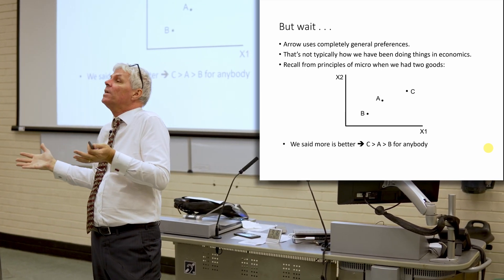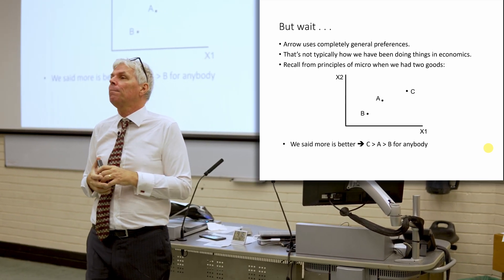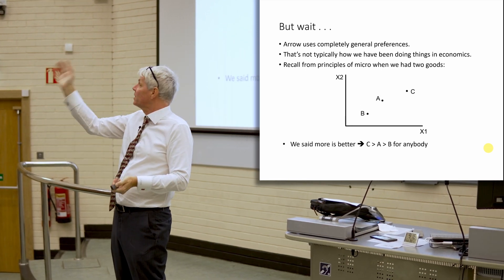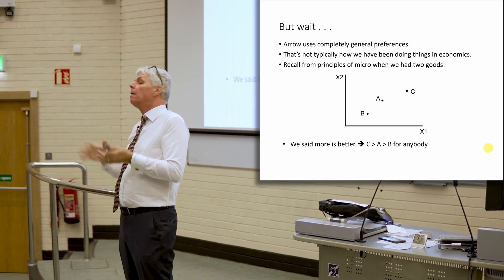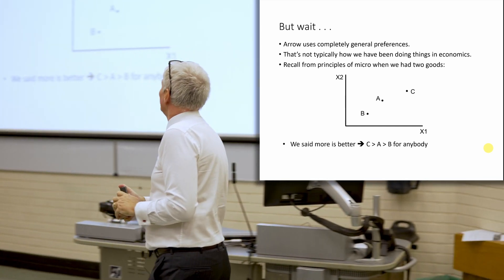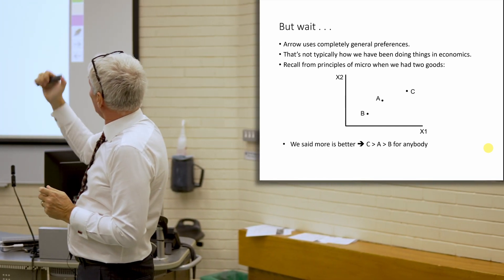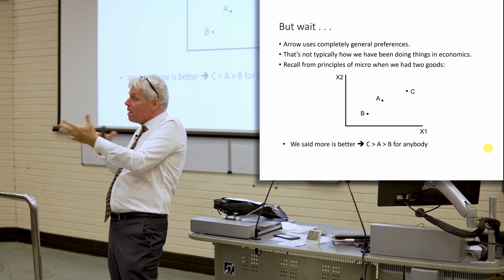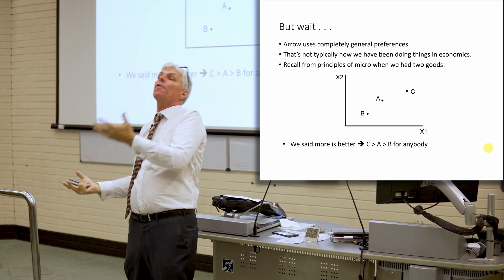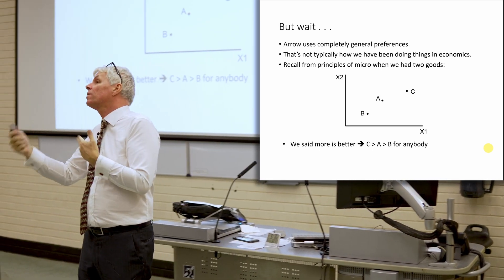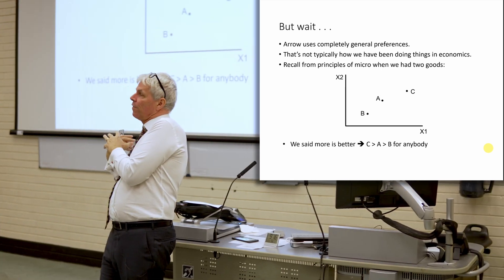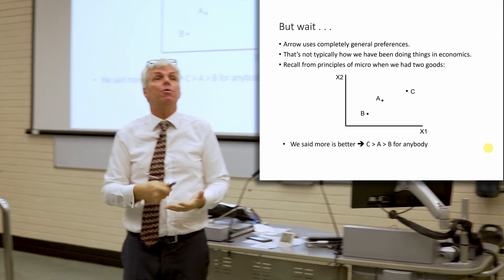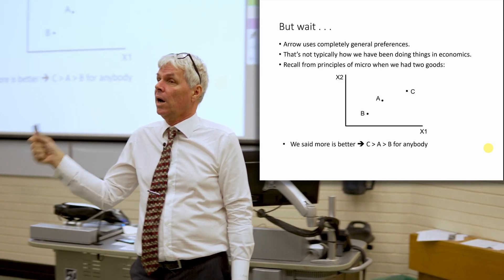For loads and loads of things, that's a perfectly reasonable structure to impose on preferences. Now there are some examples where it's not — if you really want to look at Bill Gates' consumption patterns, maybe this isn't as useful because he's got everything that he wants, stuff-wise. He doesn't have love, I'm just saying. But in terms of buying stuff, he's got what he wants. But for most of us, for most of the things that economists are concerned about, this is perfectly reasonable.